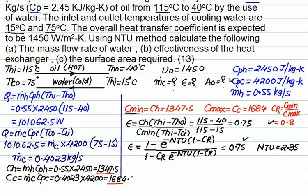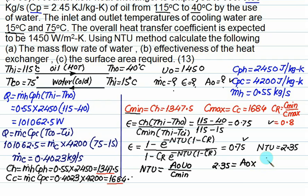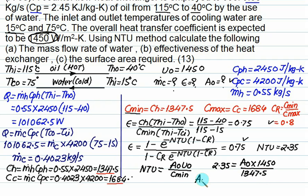Using the counter flow effectiveness formula with effectiveness equals 0.75 and CR equals 0.8, solving for NTU gives NTU approximately 2.35. Then NTU equals U0 times A0 divided by Cmin, with U0 equals 1450 and Cmin equals 1347.5, giving area A0 equals 2.184 square meters approximately.